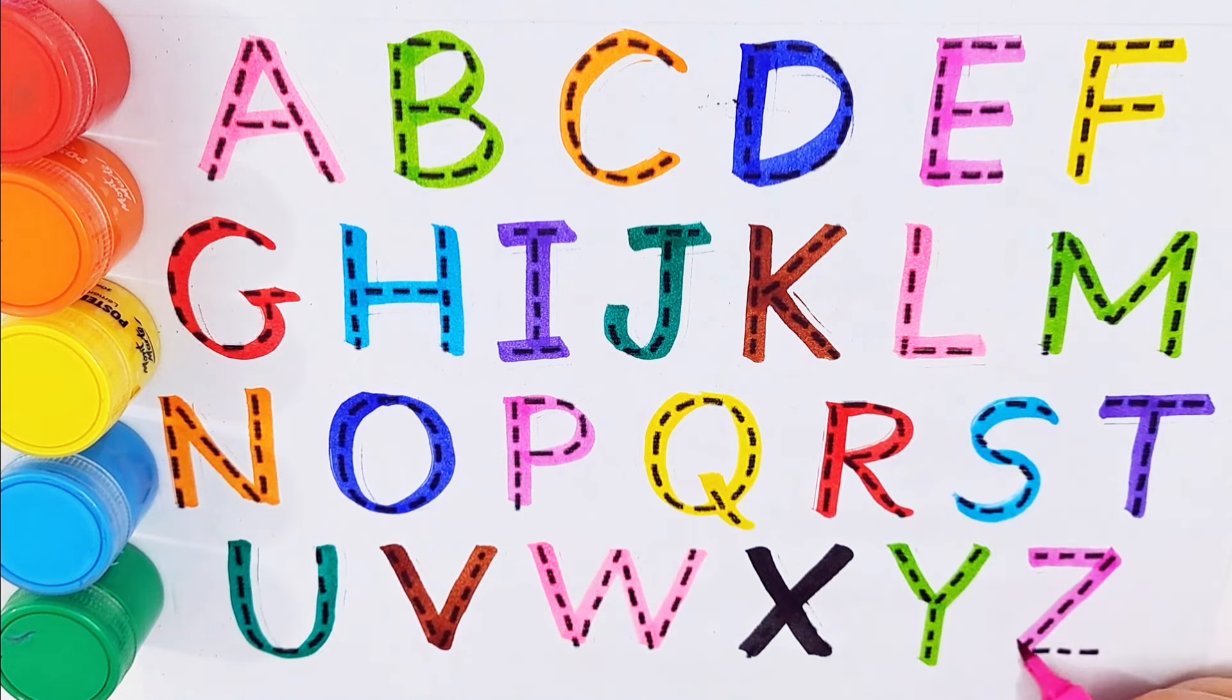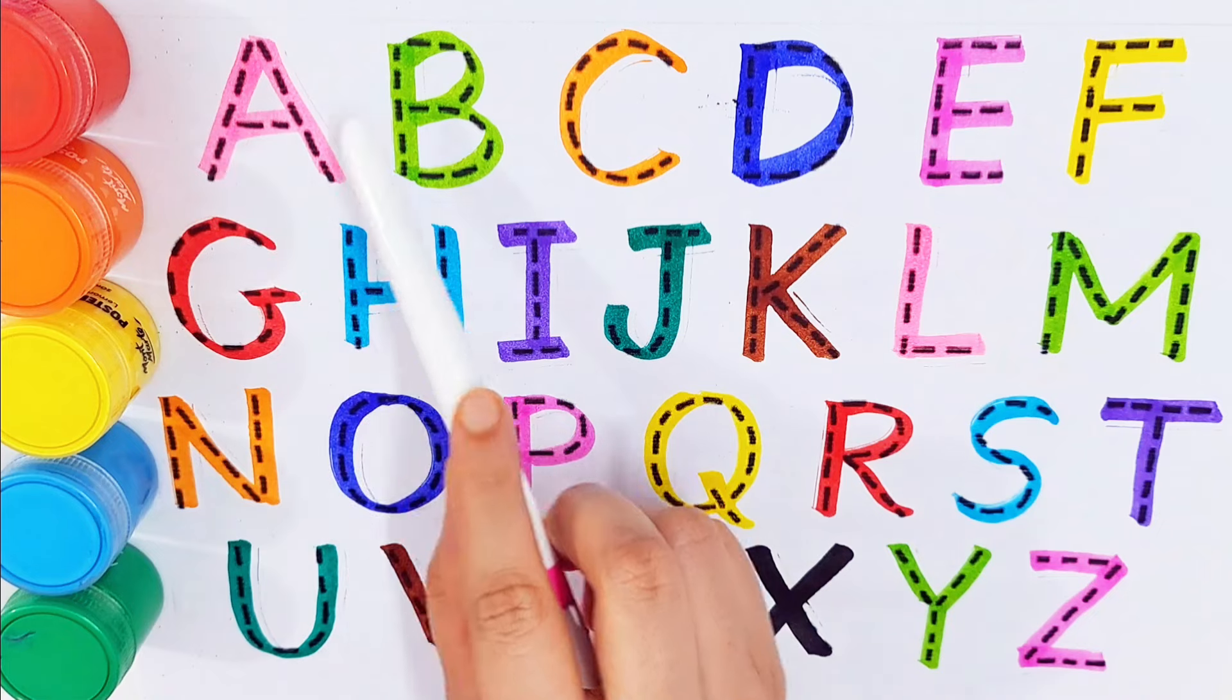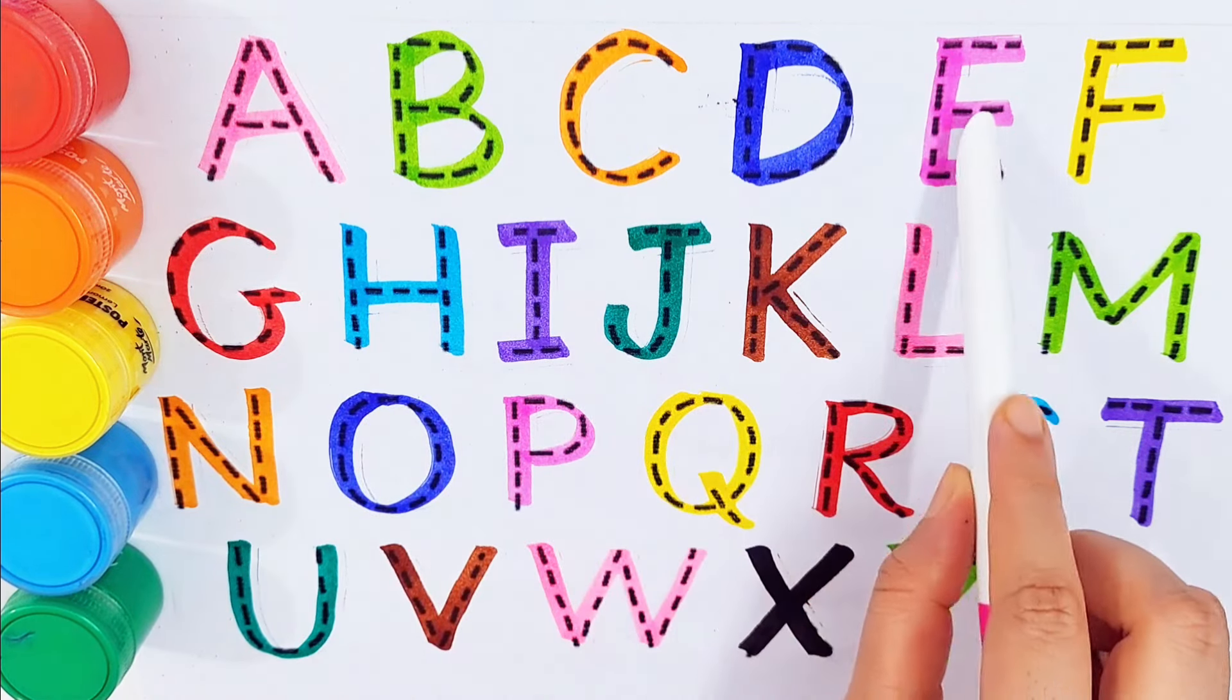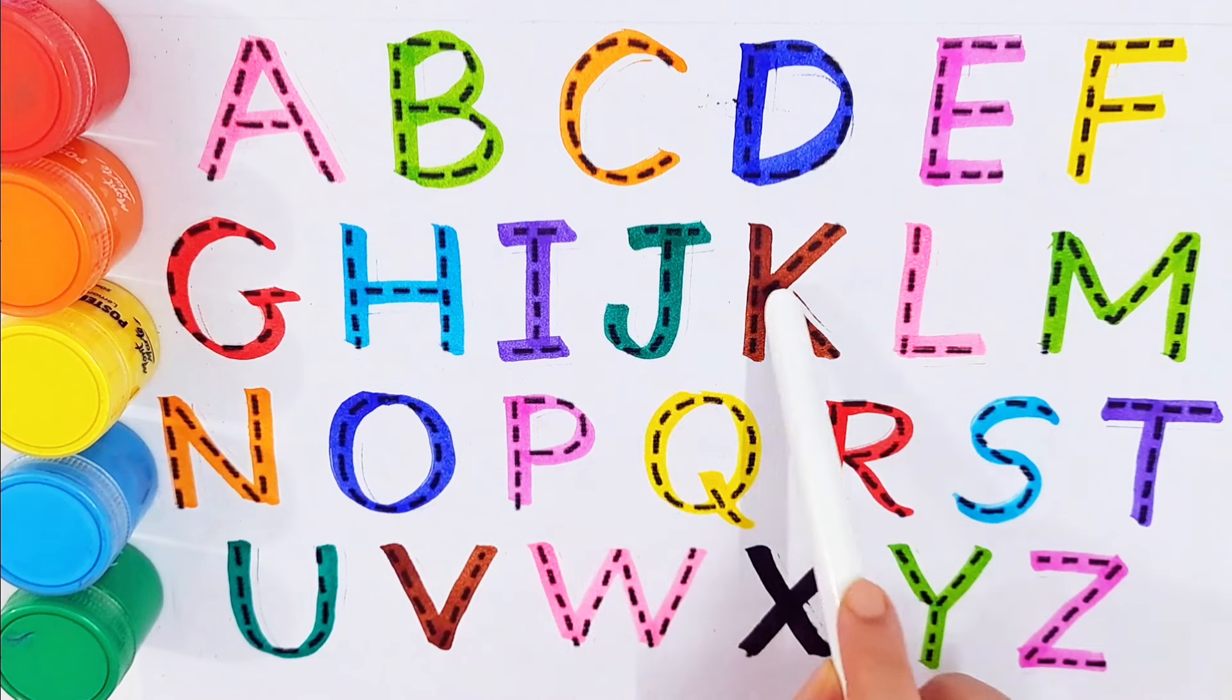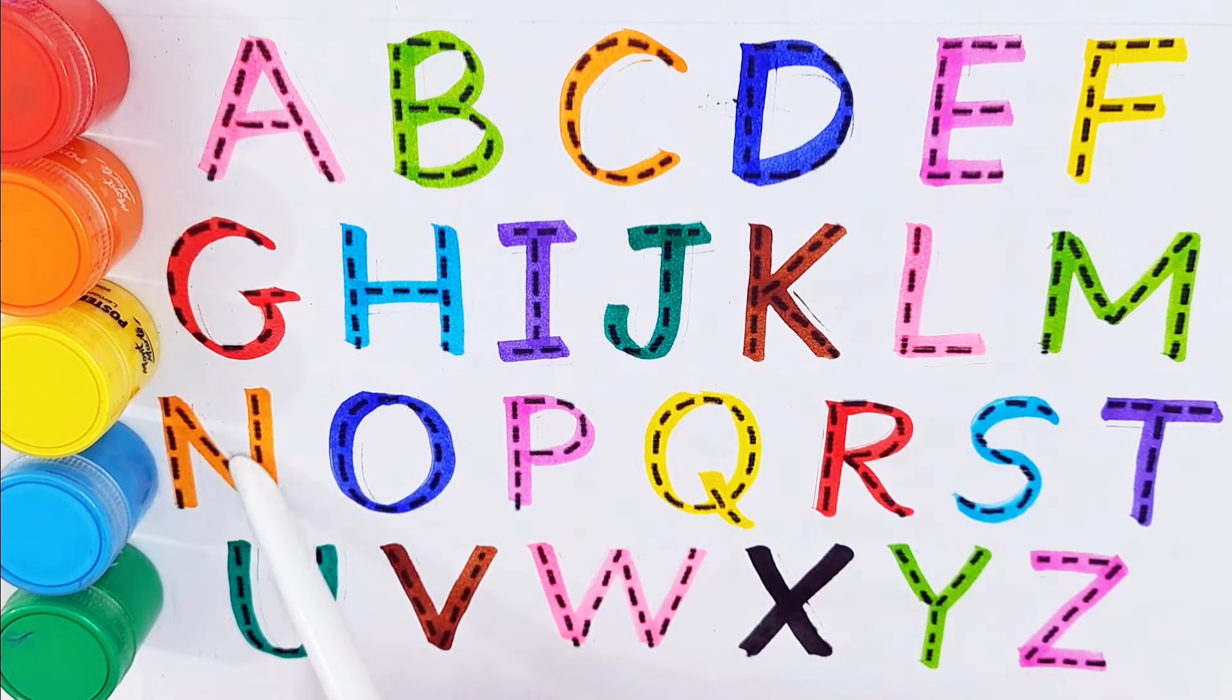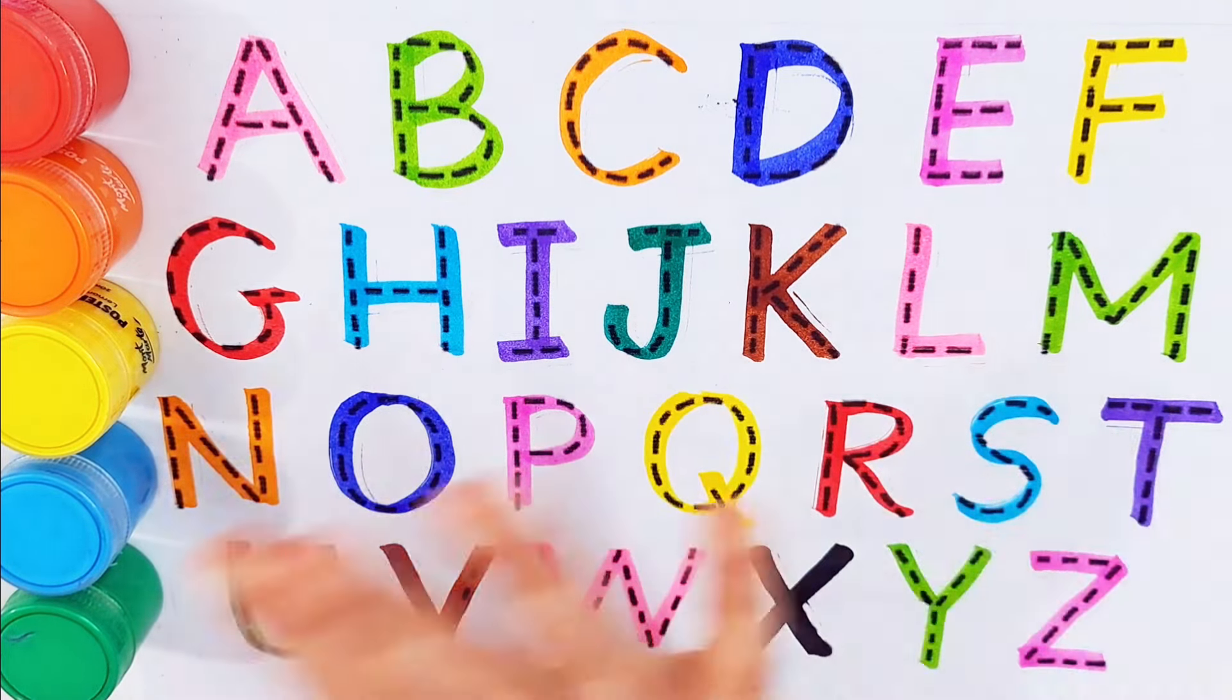Purple color, Z for zipper. A, B, C, D, E, F, G, H, I, J, K, L, M, N, O, P, Q, R, S, T, U, V, W, X, Y, and Z. Thanks for watching, don't forget to like and subscribe. See you next videos, bye bye.